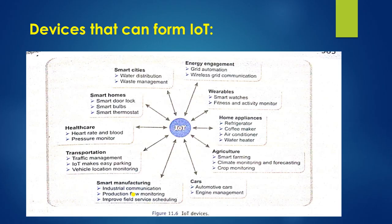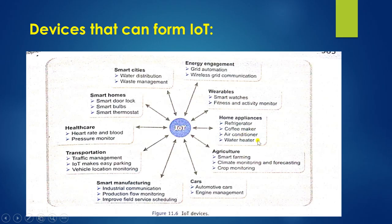Now next are the devices that can form the IoT. In this diagram you can see smart cities with water distribution and waste management using IoT, energy engagement, grid automation and wireless grid automation. In wearables there are smart watches and fitness and activity monitors. Home appliances include refrigerators, coffee makers, air conditioners and water heaters. In agriculture: smart farming, crop monitoring, climate monitoring and forecasting. In automotive: cars and engine management. All these are devices that can use IoT.